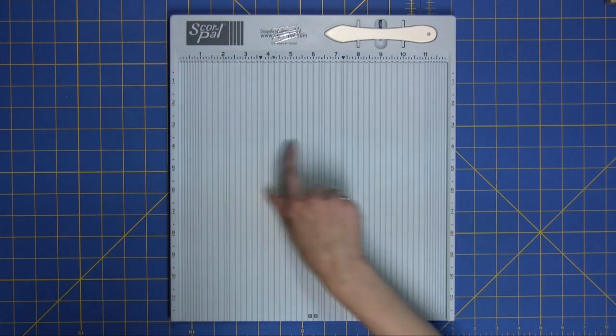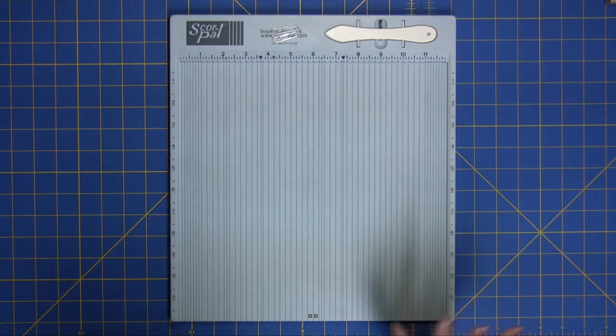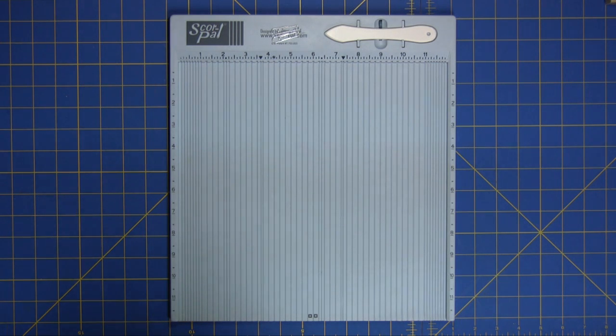You can also buy a score mat to fit in here that you can cut on and you can buy a score tote for I think it's $16 and a storage case and accessories so that you can take it with you to crops.